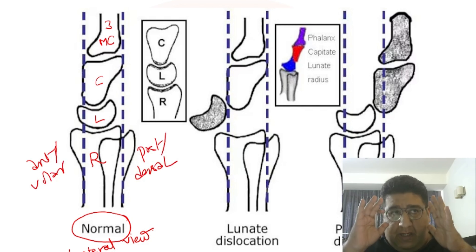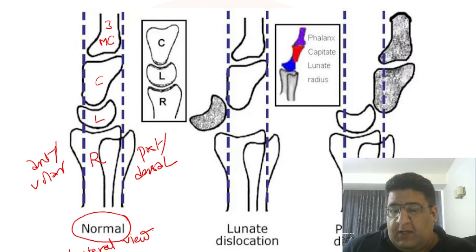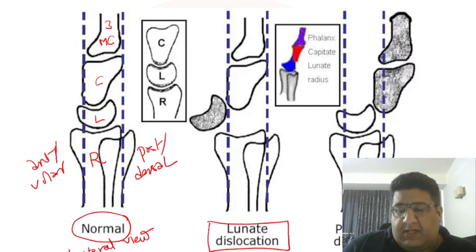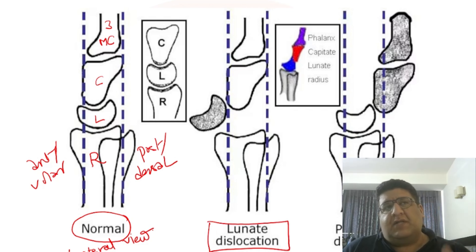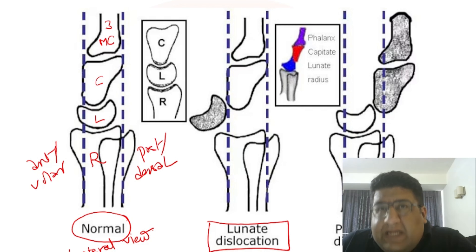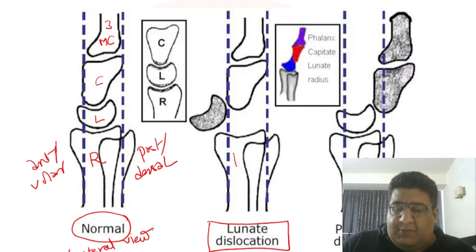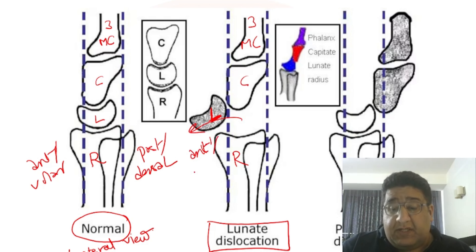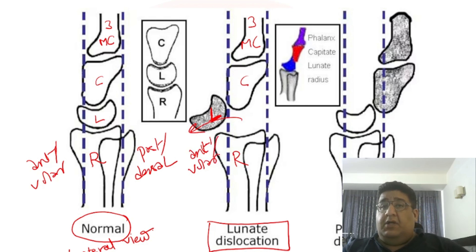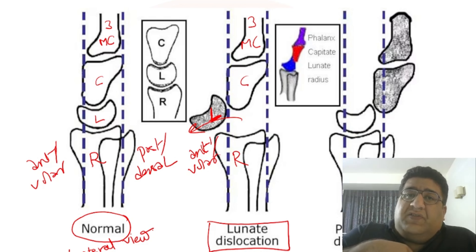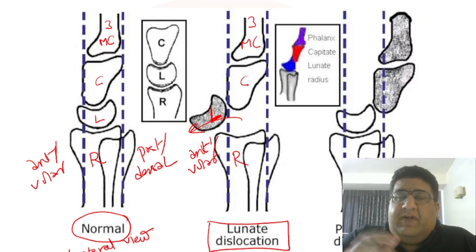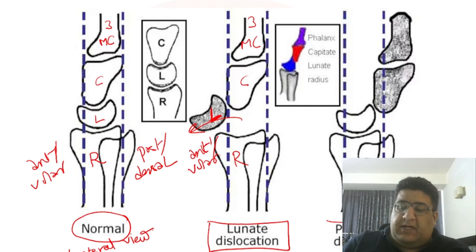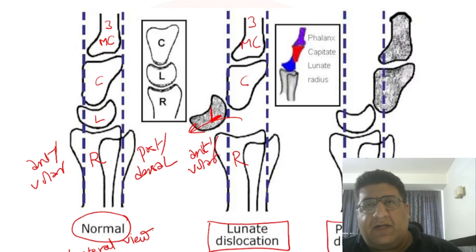Now we have to understand a very interesting topic — lunate dislocation. In lunate dislocation, the name itself says lunate. You can see radius, capitate, third metacarpal — and lunate has dislocated in the anterior or volar direction. So the concept is: in lunate dislocation, lunate will dislocate anteriorly while the rest of the bones remain in sync.